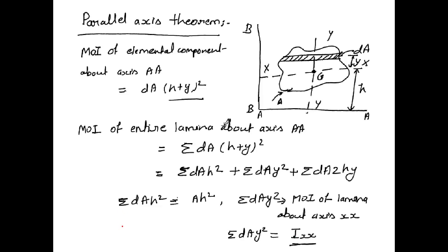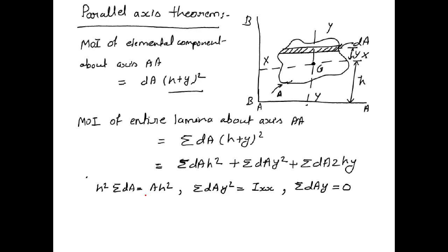The third term is 2H times summation of DA·Y. This term, summation of DA·Y, is equal to 0. Why? Because we are considering axis XX as the centroidal axis. So the moment of area about axis XX — that is, summation of DA·Y — will be 0, because XX is the centroidal axis.